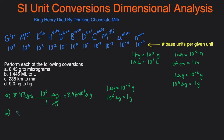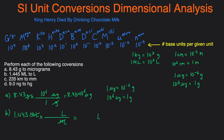Problem B: we're given 1.445 megaliters and want to convert to liters — going from a non-base unit to a base unit, so only one conversion is needed. We put megaliters on the bottom to cancel and liters on top. Mega is 10 to the 6, so in every 1 megaliter there are 10 to the 6 liters. Multiplying gives us 1.445 times 10 to the 6 liters.